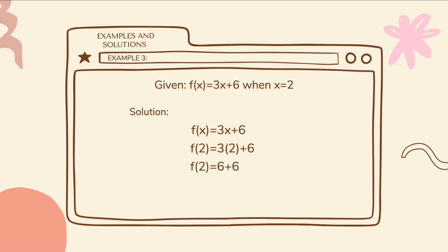3 times 2 is equal to 6. 6 plus 6 is equal to 12. The final answer is f of 2 is equal to 12.